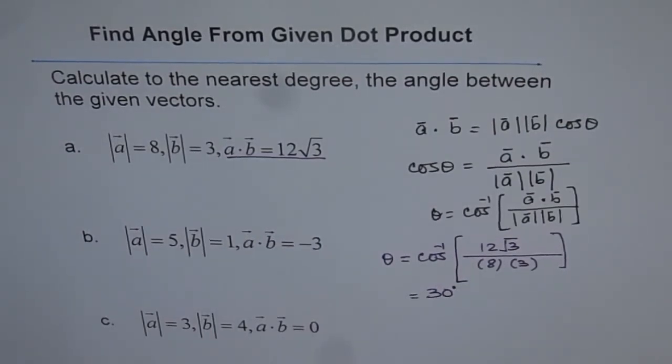So that is how the angle can be found if you know the magnitude of the vectors and their dot product. So try these part b and c.